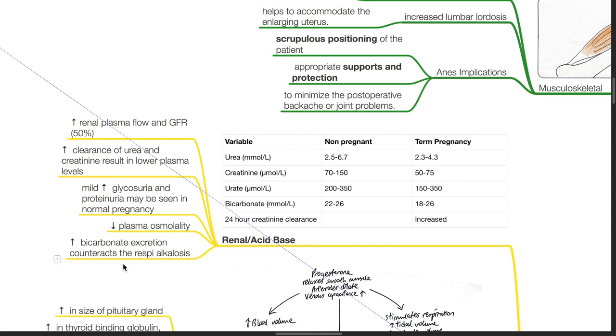In non-pregnant patients, urea is 2.5 to 6.7 mmol/L; in term pregnancy, 2.3 to 4.3 mmol/L. Creatinine is 70 to 150 μmol/L in non-pregnant patients and decreases to 50 to 75 μmol/L in pregnancy. Urate is 200 to 350 μmol/L in non-pregnant patients and decreases to 150 to 350 μmol/L in pregnancy.